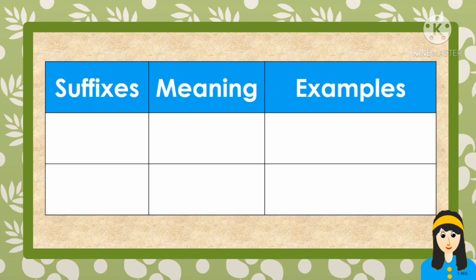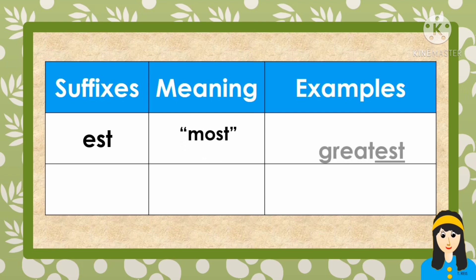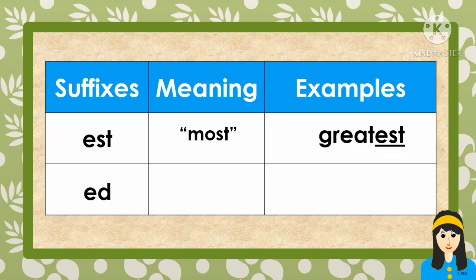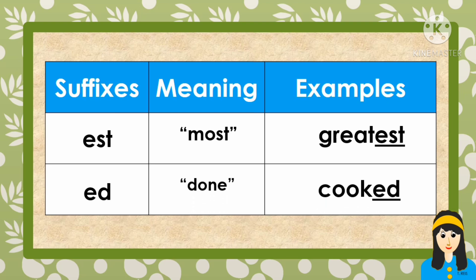These are example words for suffixes. First one is est. The meaning of est is most. The example word with est is greatest. And the second one is ed. The meaning of ed is done, and the example word is cooked.